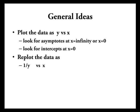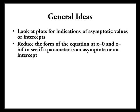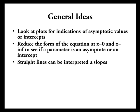We're going to re-plot the data as 1 over y versus x, log of y versus x, 1 over y versus the log of x, log of y versus log of x. And again, we're going to look for the plots for indications of asymptotic values or intercepts. Then, once we've got some idea that some of these exist, we're going to reduce the form of the equation at x equals 0 and x equals infinity to see if a parameter shakes out as an asymptote or as an intercept. Straight lines can be interpreted as slopes.